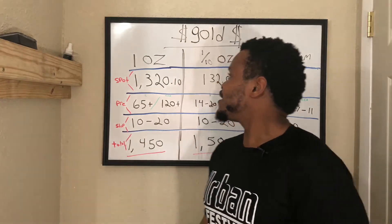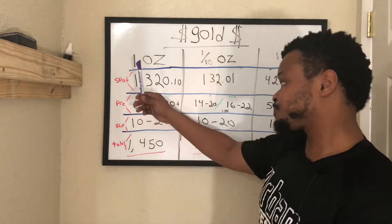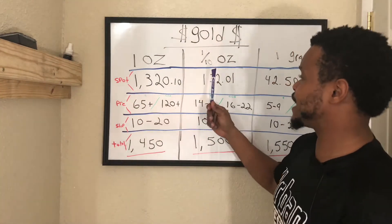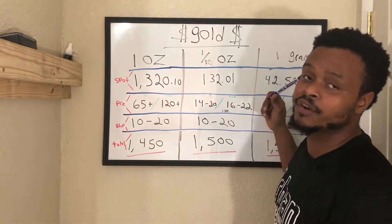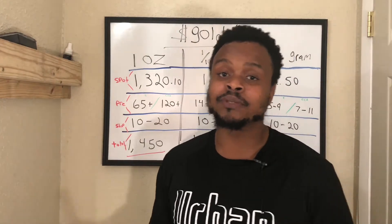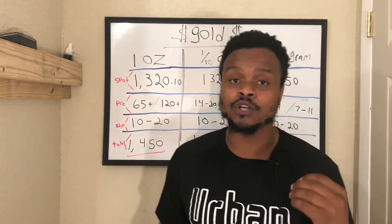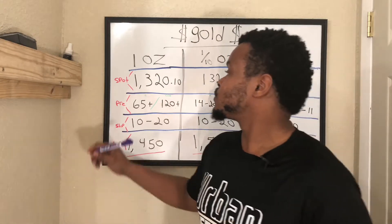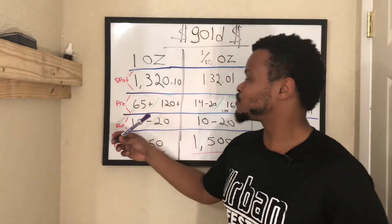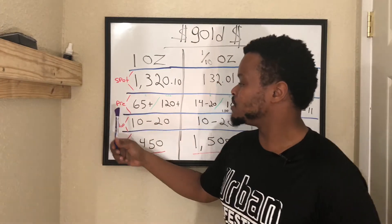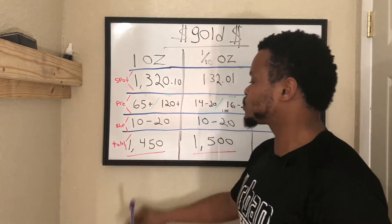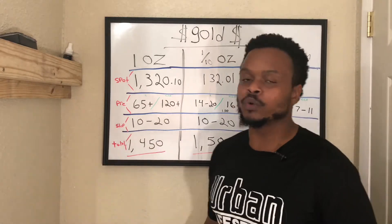What we have here is an ounce, a tenth of an ounce, and a gram. There are different sizes, but these are the main three I'm going to be focusing on today. We also have the spot price, the premium, the shipping, and the total.